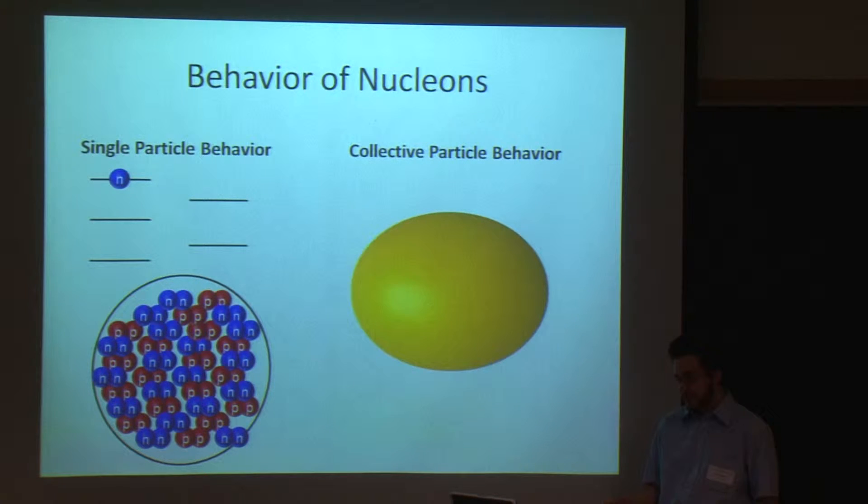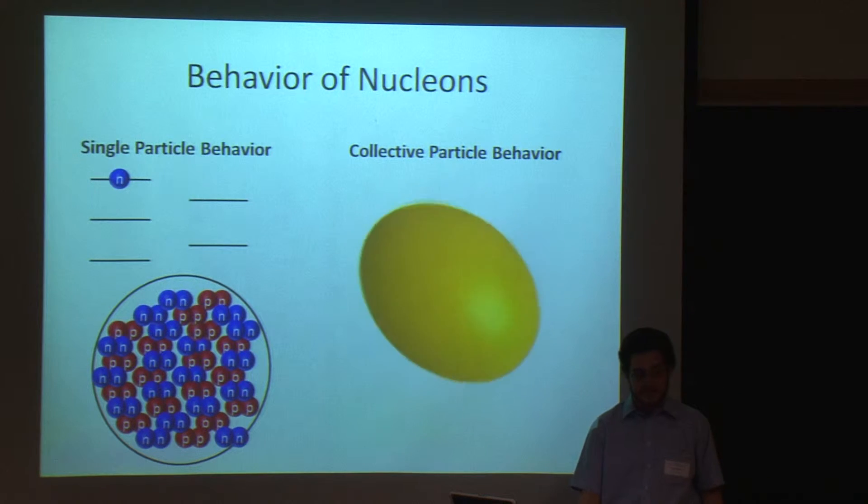In addition to this single particle behavior, there is a collective behavior where many nuclei, especially in this mass region, have this oblong shape and will tend to be spinning. And this rotation also has a characteristic energy and spin and parity.